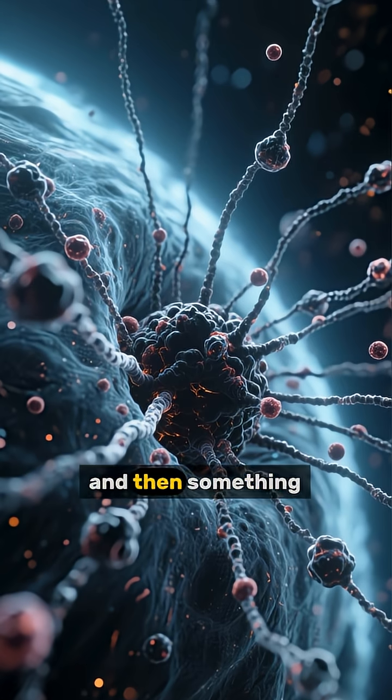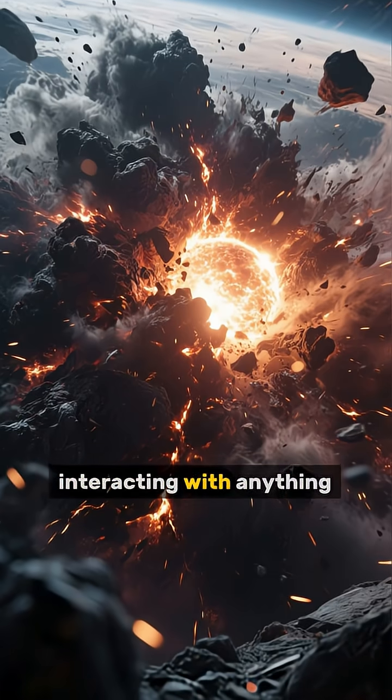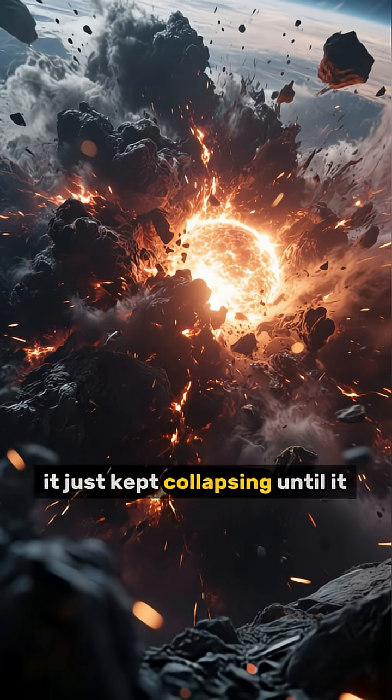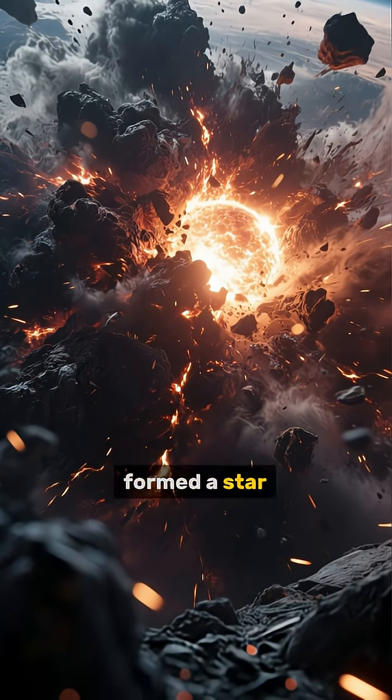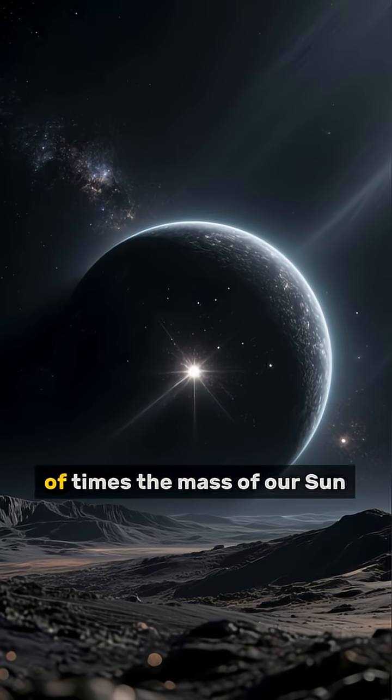And then something caused it to collapse, and since it wasn't interacting with anything, it just kept collapsing until it formed a star. Now these dark stars would have been huge, maybe millions of times the mass of our sun.